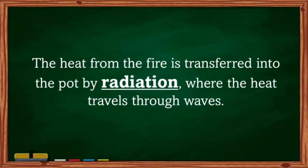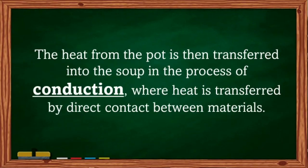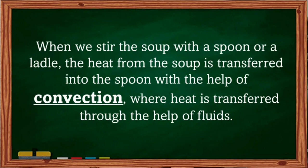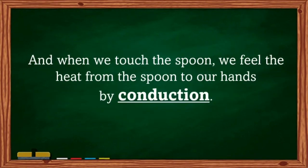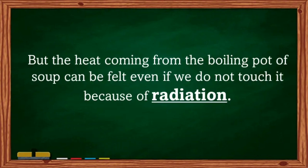To summarize using our cooking example: the heat from the fire is transferred into the pot by radiation, where heat travels through waves. The heat from the pot is then transferred into the soup by conduction, where heat is transferred by direct contact. When we stir the soup with a spoon, heat from the soup is transferred to the spoon through convection via the fluid. When we touch the spoon, we feel the heat by conduction. And the heat from the boiling pot can be felt even without touching it — that is radiation.